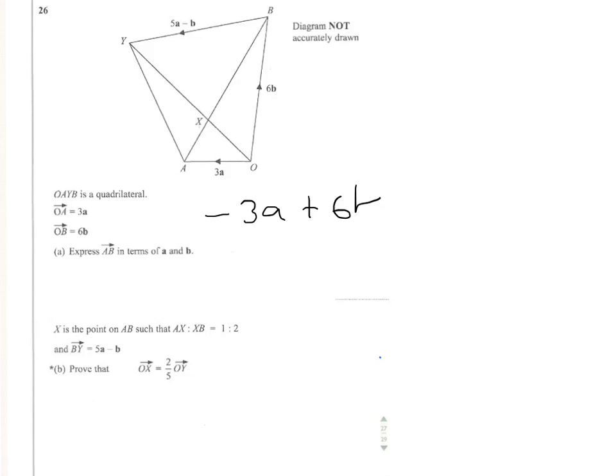The second question is where most of the marks come from. We're told that X is on the point AB, such that the ratio of AX to XB is 1 to 2. So AX is half the distance X to B and one third the full distance A to B. That'll be useful to know as we do the question.